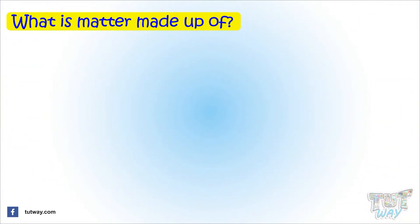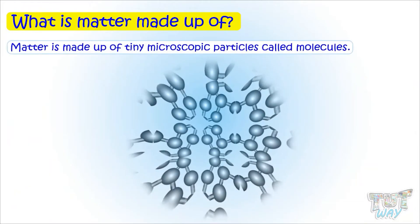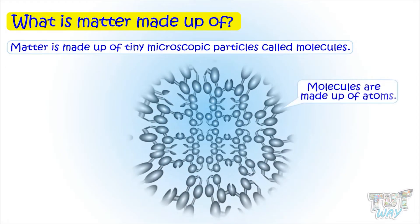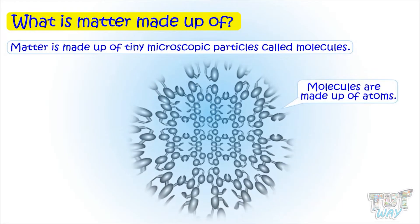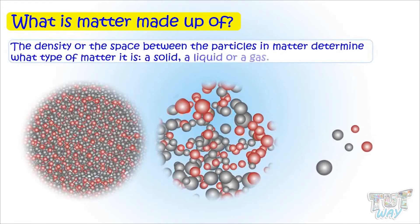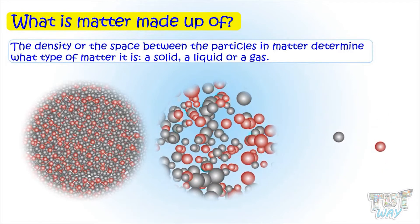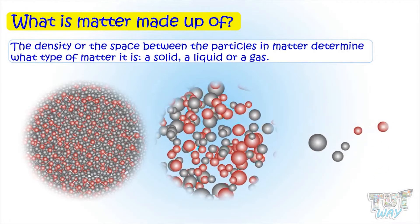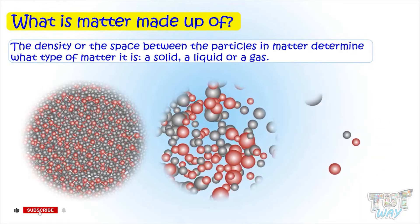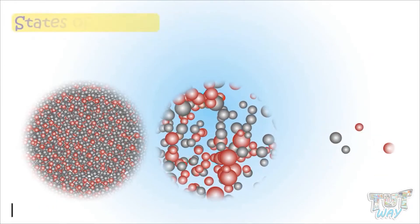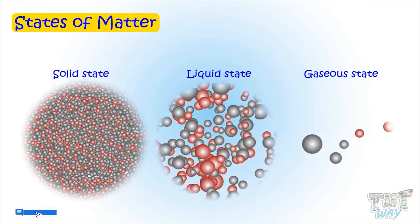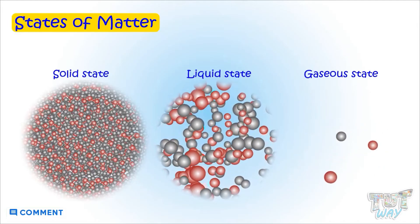Now we will see what matter is made up of. Matter is made up of tiny microscopic particles called molecules, and further molecules are made up of atoms. The density and the space between particles of matter determine what type of matter it is — a solid, a liquid, or a gas. So states of matter can be solid, liquid, or gaseous depending on the density and the space between the particles of the matter.